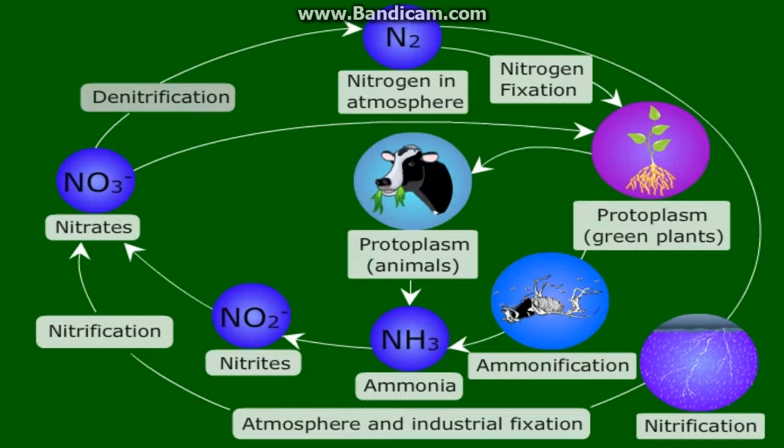Thus, there is a nitrogen cycle in nature, in which nitrogen passes from its elemental form in the atmosphere into simple molecules in the soil and water, which get converted to more complex molecules in living beings, and back again to the simple nitrogen molecule in the atmosphere.